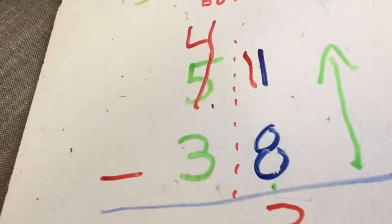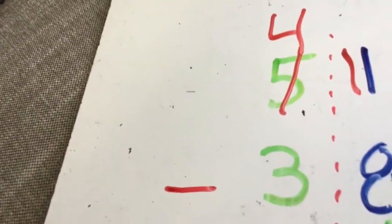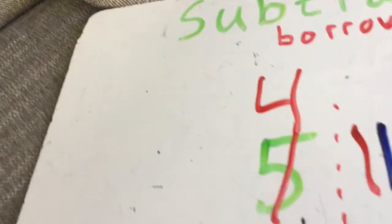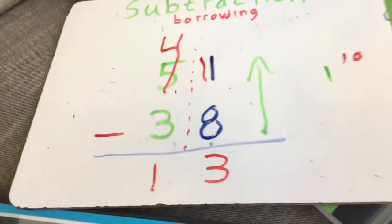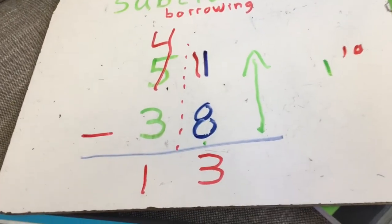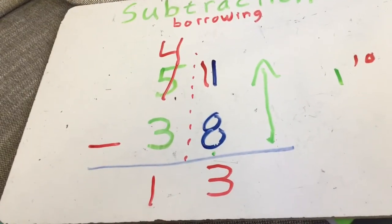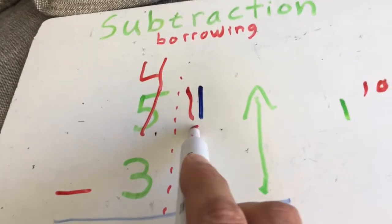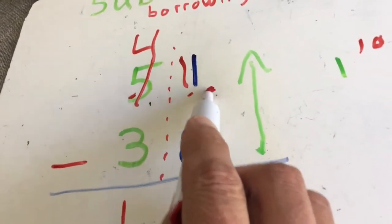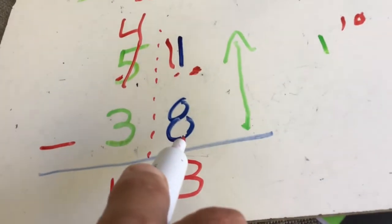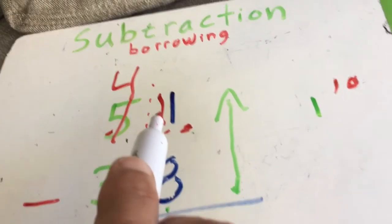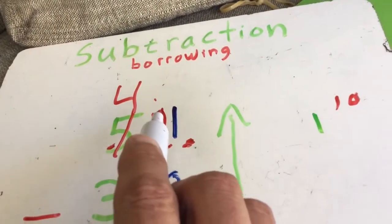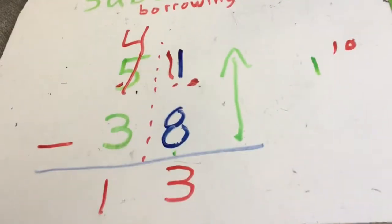Okay, now this side, the tens place, I take three away from four. Again, the bottom from the top. What is three minus four? Well, it's one. And what is 51 minus 38? It's 13. You're borrowing from the tens place because you don't have enough in the ones place to do what you need to do. So you're borrowing from the tens, giving it to the ones, adding the 10, which is really adding a one in front of whatever number that is. And then you're doing the math.